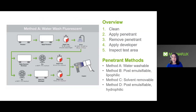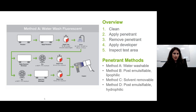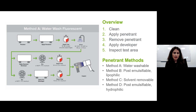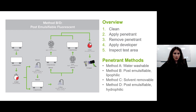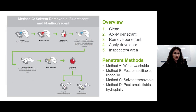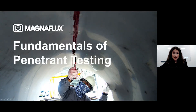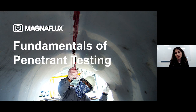Methods are where we get more specific about the steps needed for your inspection. Depending on what method is used, it will determine the steps needed during inspection. There are four penetrant methods: Method A, which is water washable; Method B and D, which are post-emulsifiable lipophilic and post-emulsifiable hydrophilic; and Method C, which is solvent removable. Thank you everyone for coming to Fundamentals of Penetrant Testing. Please send feedback to our support team, interact with us on LinkedIn, and add Noemi and myself if you have any questions.